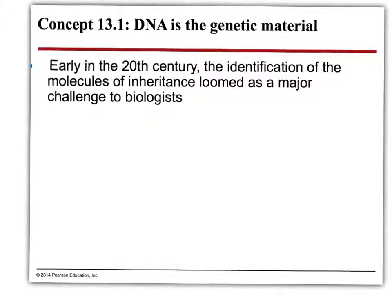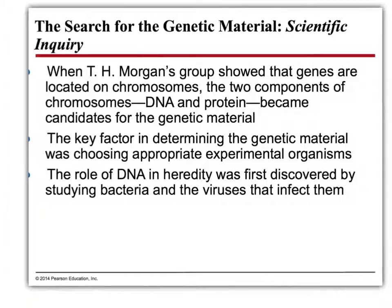Morgan's group showed that genes are located on chromosomes. Chromosomes are made of DNA and protein. So either DNA, protein, or both together is the genetic material — those are the candidates. How do we determine one versus the other? The key factor was deciding what organisms and experiments to use. This was first discovered by using bacteria, which you'll do in lab next week. Bacteria have a unique ability to pick up pieces of DNA from their environment and utilize them — in a process called transformation.